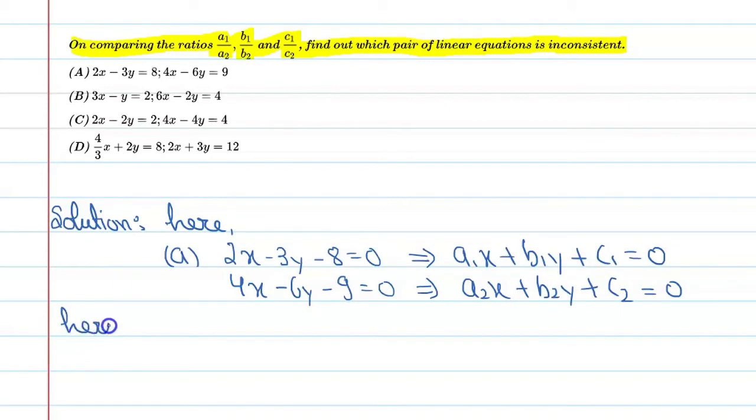So you can say here A1 is equal to 2, A2 is equal to 4. B1 is equal to minus 3, and B2 is equal to minus 6. C1 is equal to minus 8, C2 is equal to minus 9.